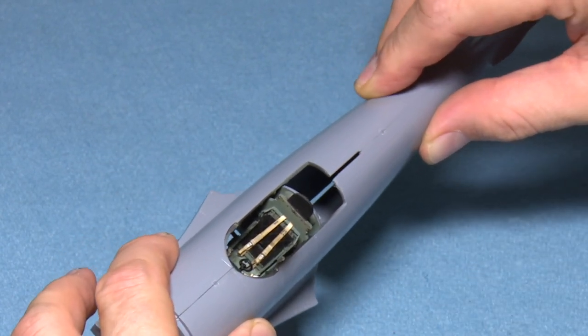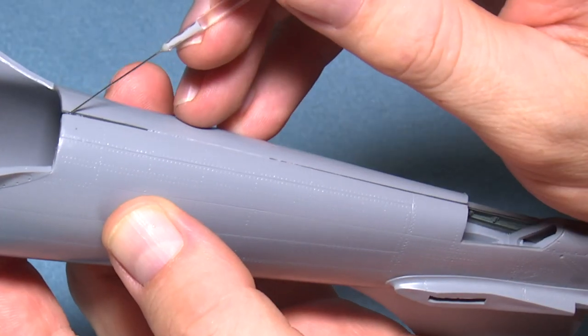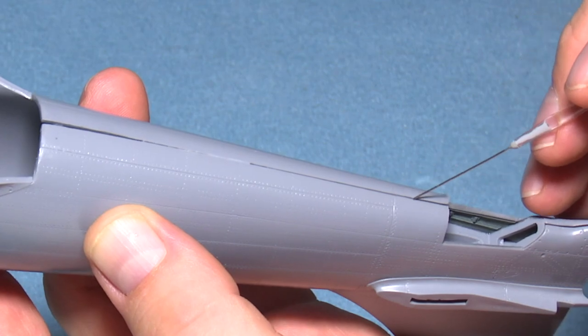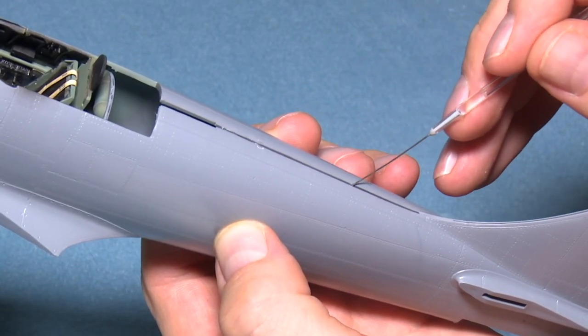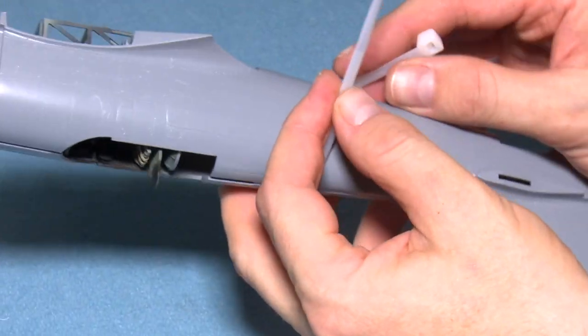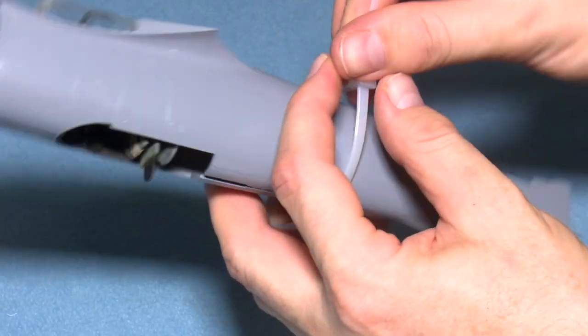When the two fuselage halves are joined, you can then run the needle along the outside edge, just to make sure that there's sufficient glue within the joint. And as before, the best way to clamp the two fuselage halves together is to use cable ties.